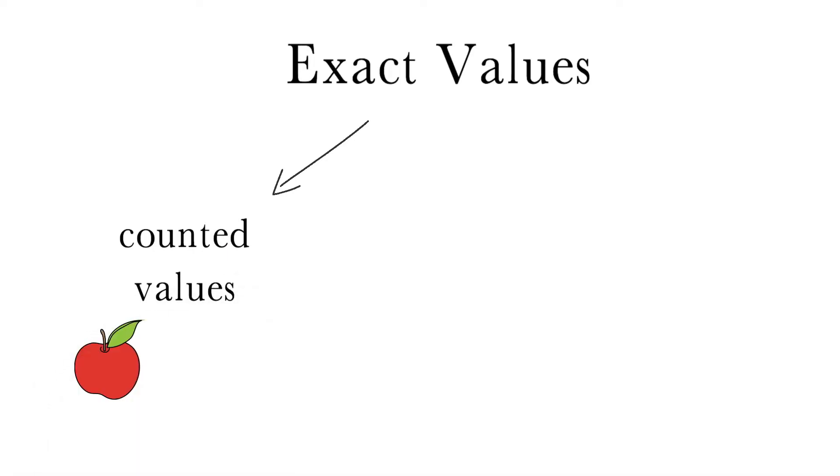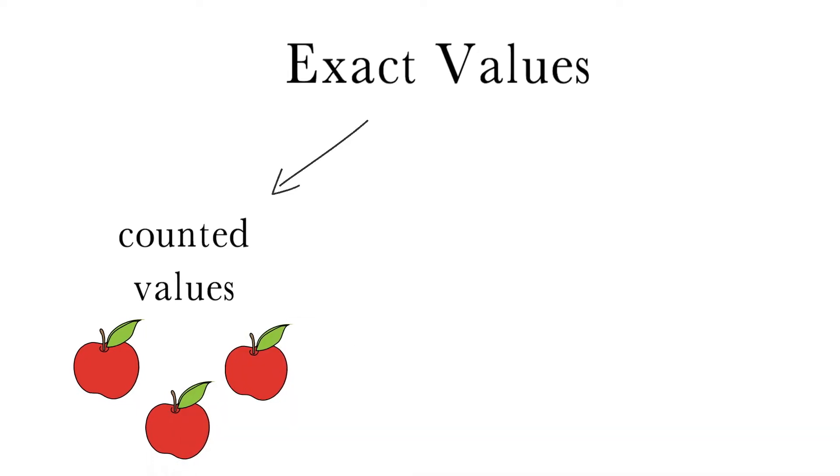For example, there are exactly three apples in the picture. This value is counted, not measured, so we are completely certain about the value.